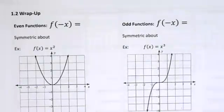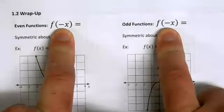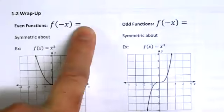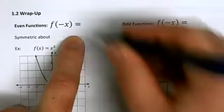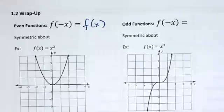I want to circle back on even and odd functions because we didn't quite finish. We talked about how to algebraically check if something's even or odd but didn't cover the important properties. It has to do with symmetry. The rule: for even functions, when you plug in negative x you get the original function back.